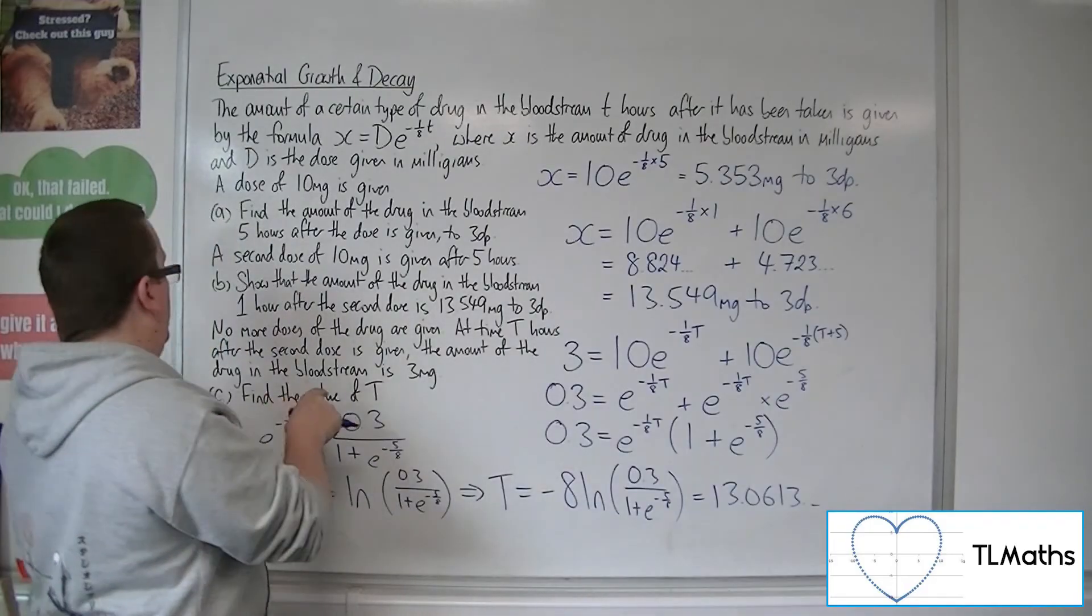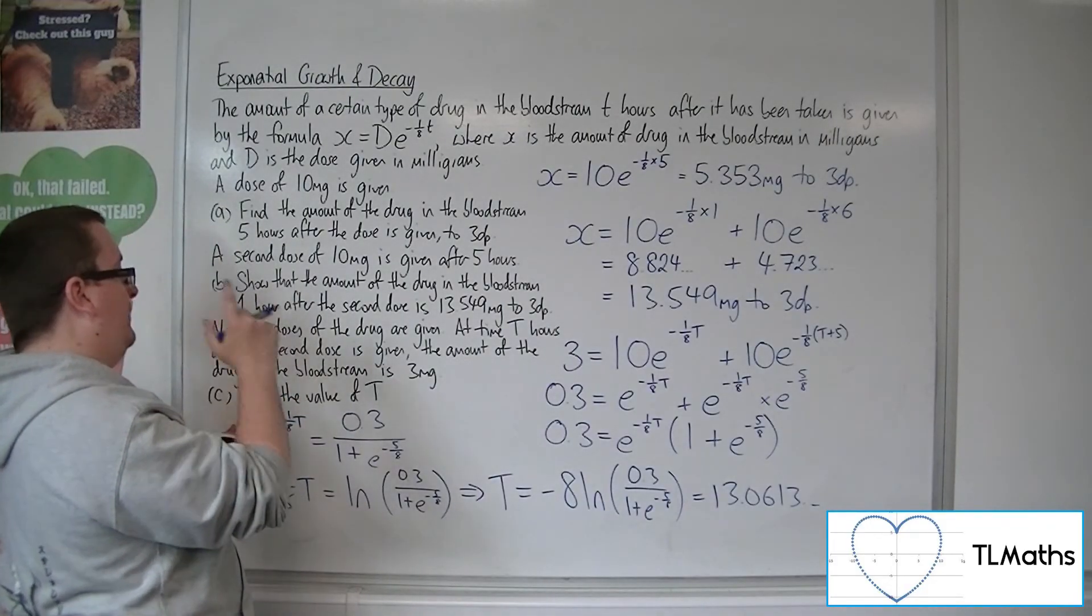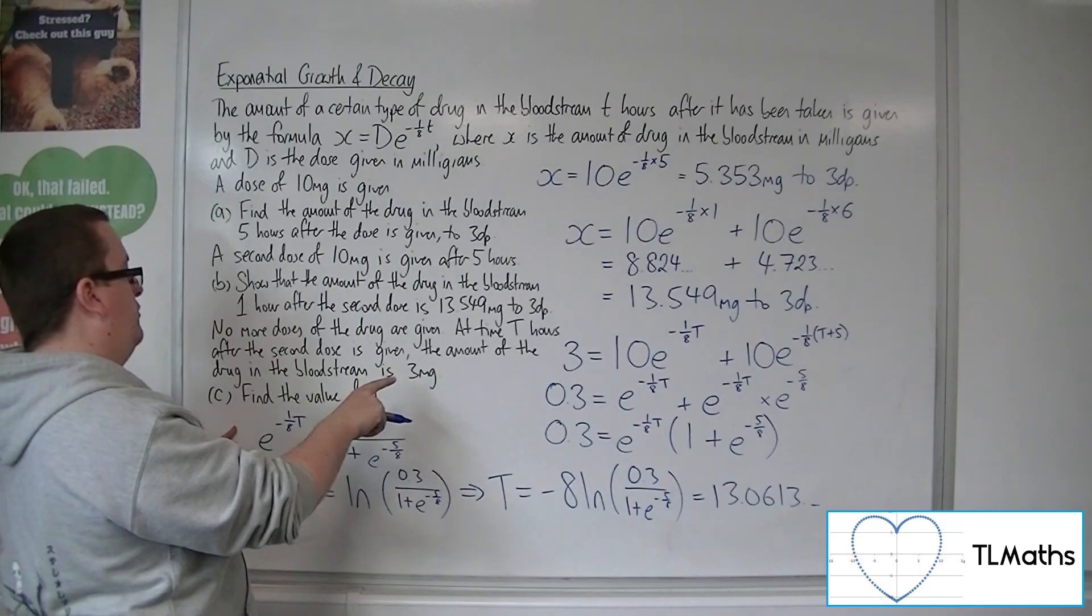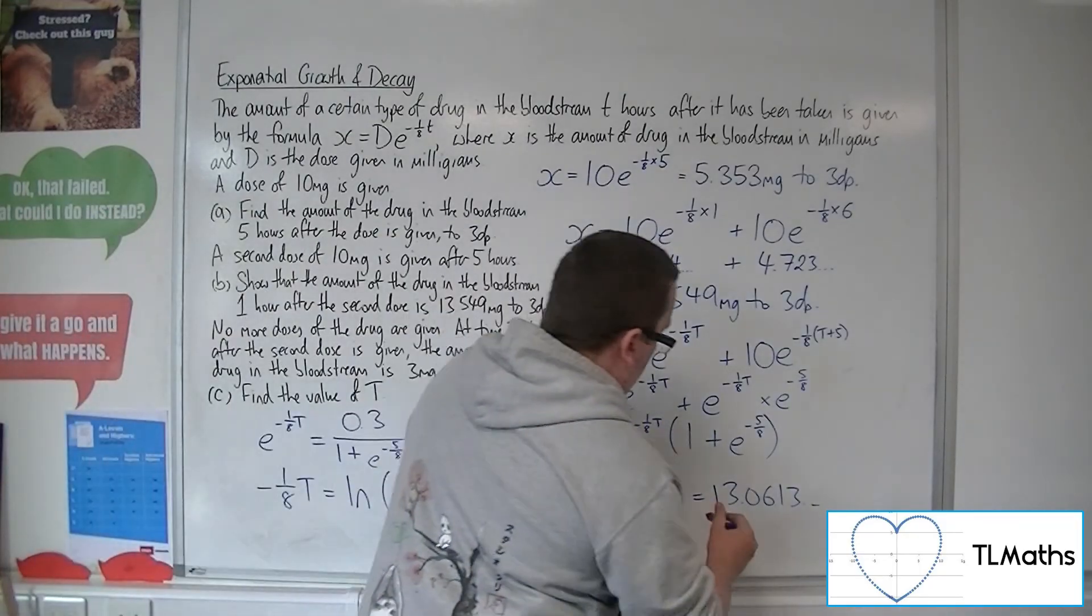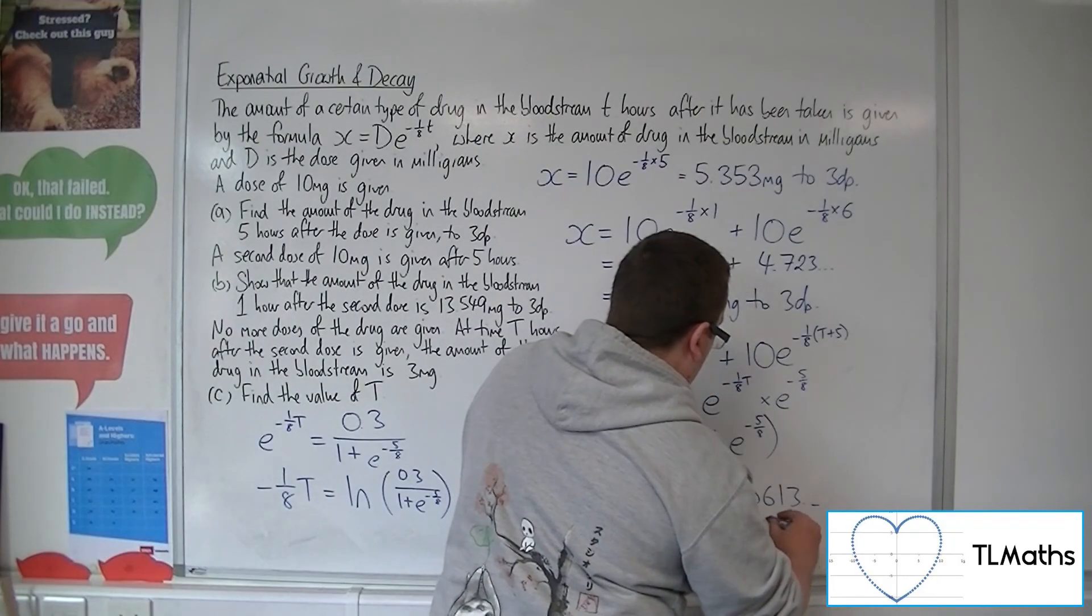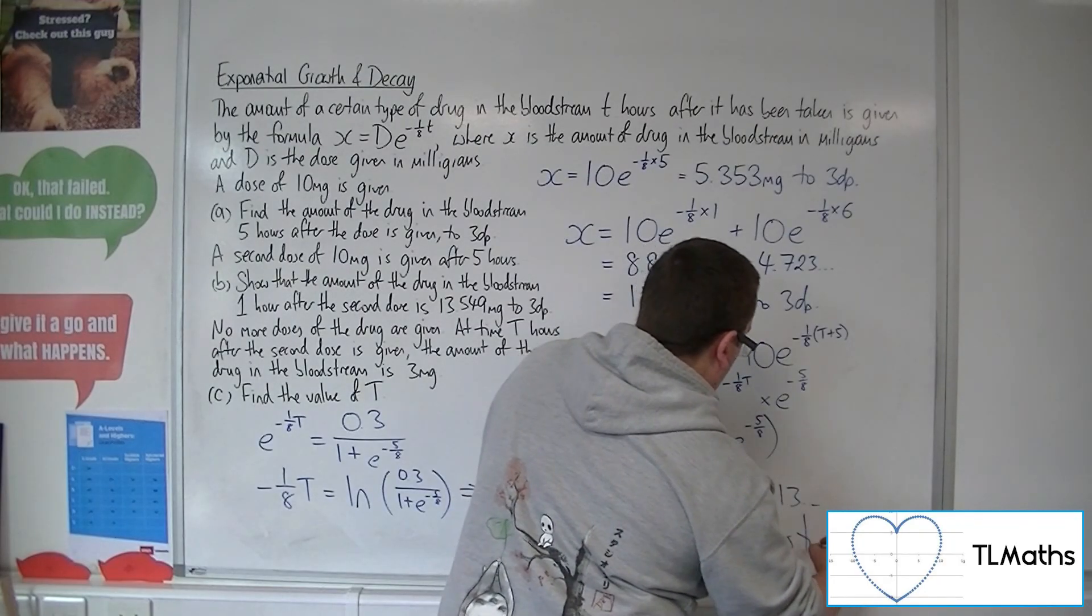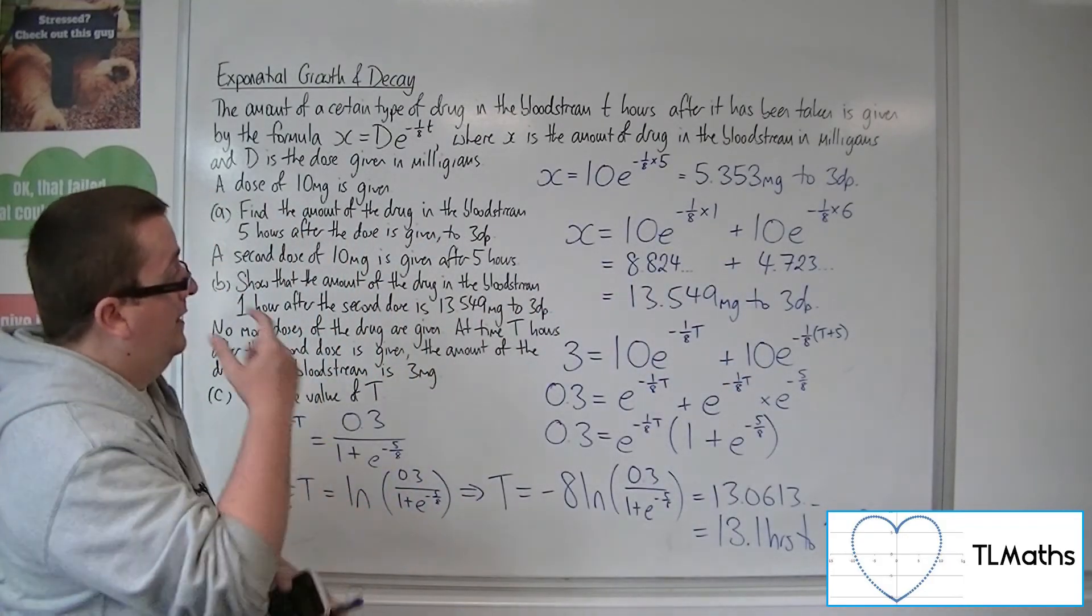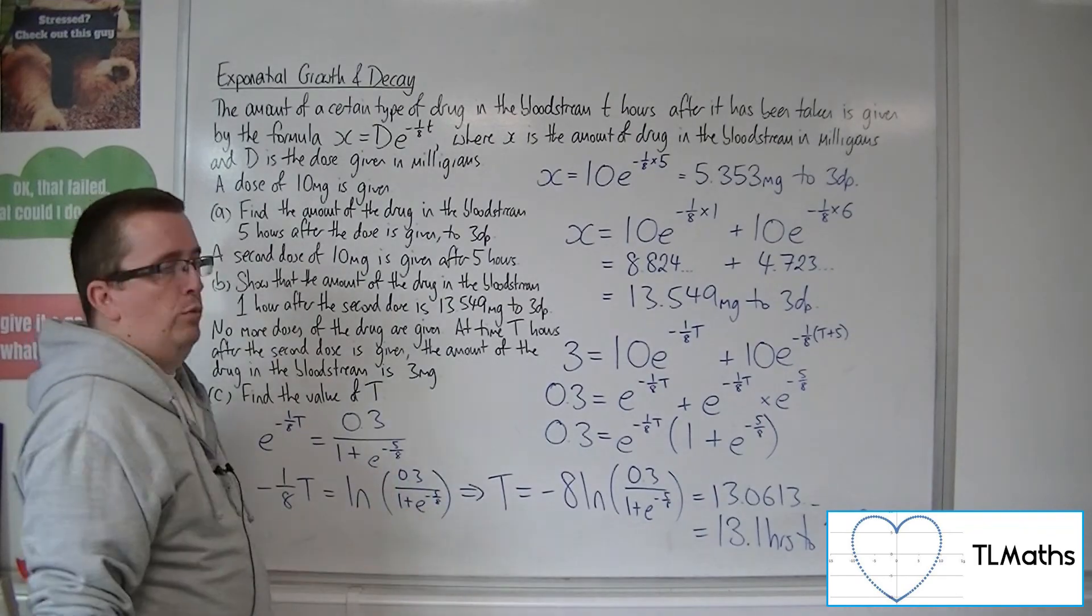Okay, so where it's asking at time T hours, the amount of the drug in the bloodstream is three milligrams, find the value of T. Well, that's 13.1 hours to three significant figures. Okay. And that's how we can solve this problem.